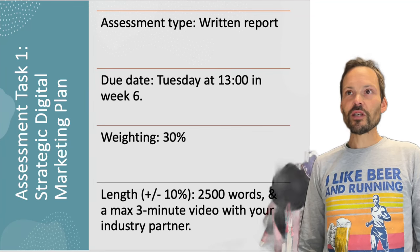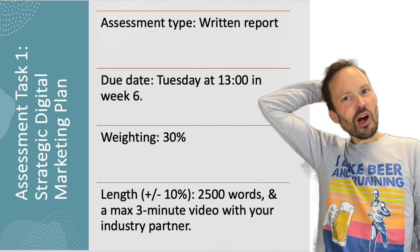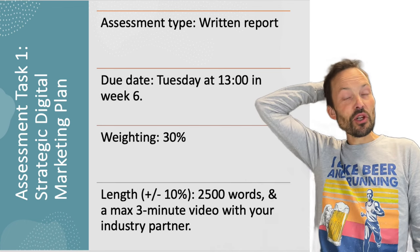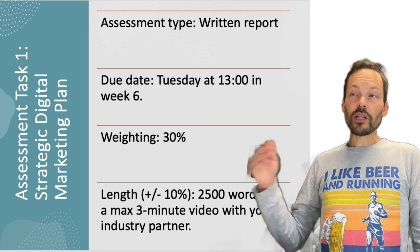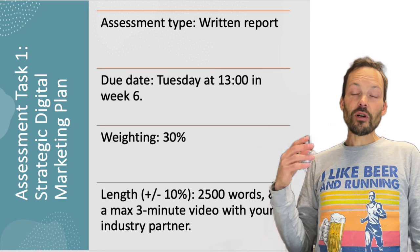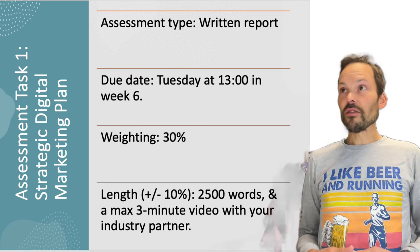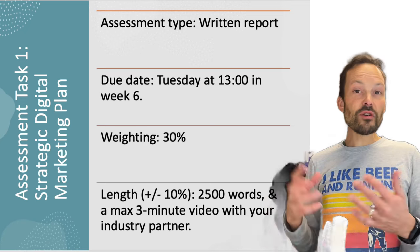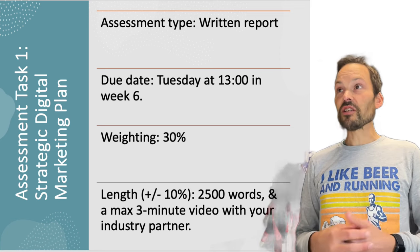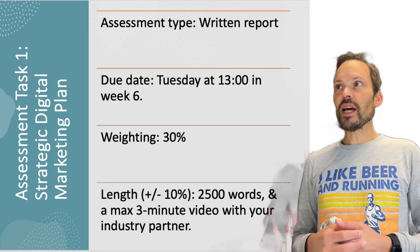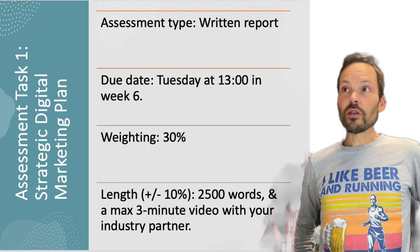Assignment 1 in digital marketing is part of a relatively large, complex project that you will undertake in this course. Assignments 1 and 2 are linked. Assignment 1 is creating a digital marketing plan, and then you will execute that plan in assignment 2. So whatever you're planning for assignment 1, just keep in mind that you will actually execute this plan.